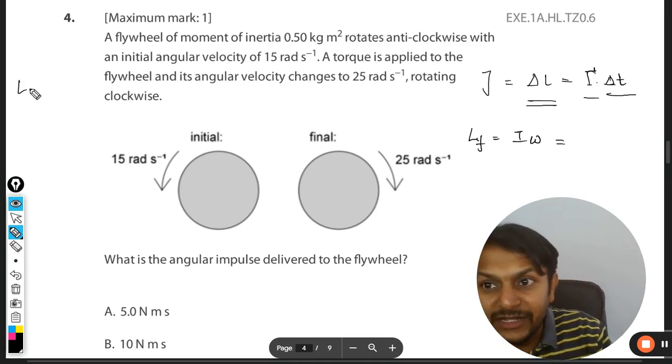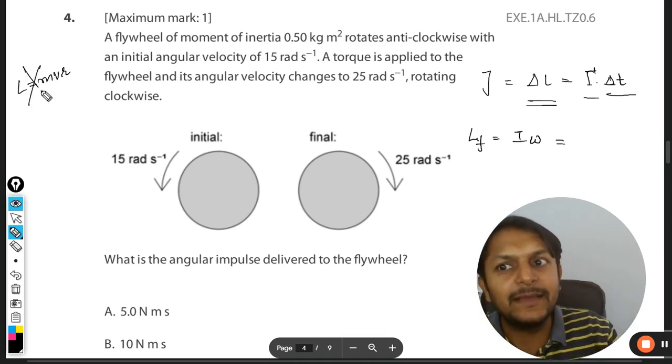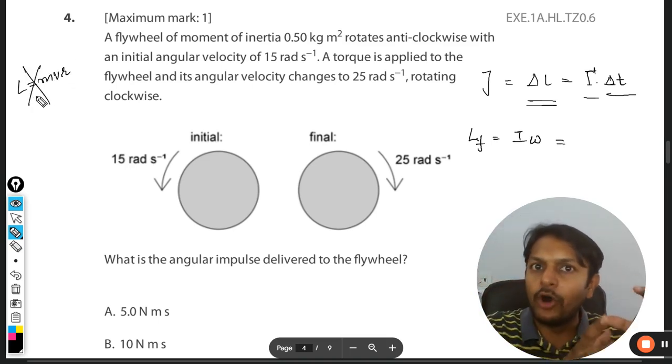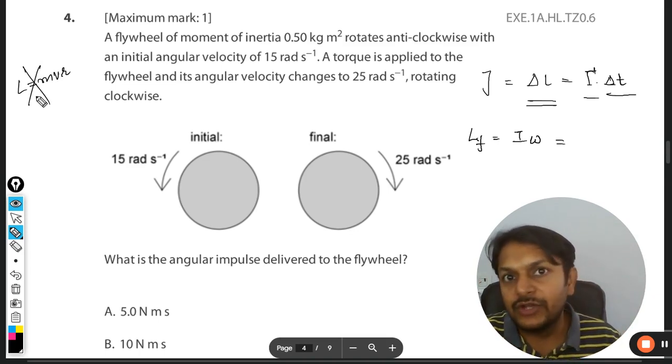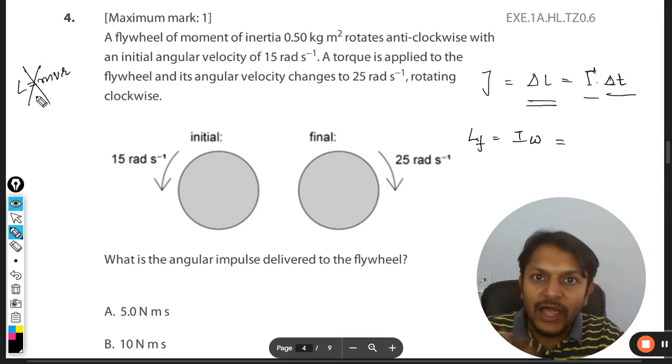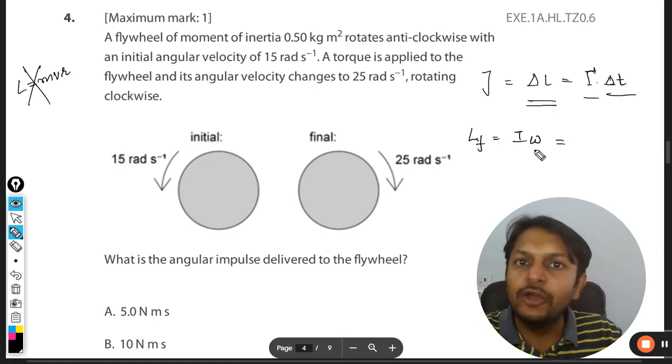So what is the final angular momentum? This will be I omega. It is highly tempting to use L = mvr, but this is absolutely wrong. This is only for a bob rotating in a circular fashion, just like an electron rotating around the nucleus. That formula is not applicable here. I'm very clear about it. Now angular momentum is I omega, which is a universal formula.